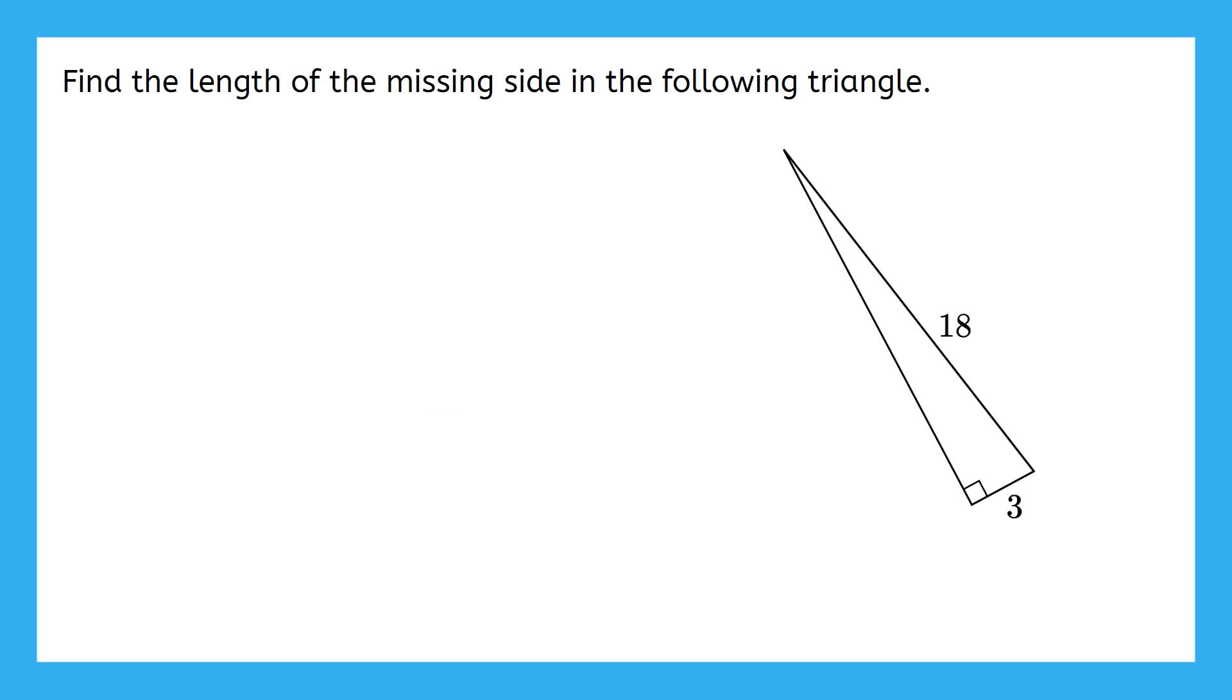First, we label the sides. Remember, the hypotenuse has to be our c value, so we get that c is 18. However, if you switched your a and b from what I have here, that's totally okay.